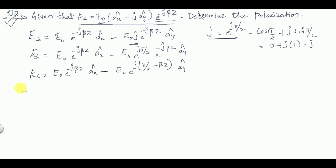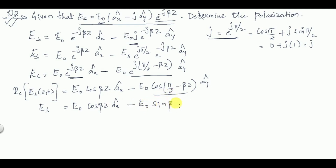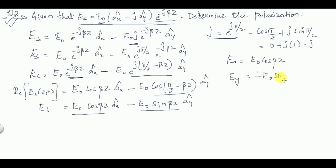For polarization we consider only the real part. The real part of E⃗_s is: E₀ · cos(βz) â_x minus E₀ · cos(π/2 − βz) â_y. Since cos(π/2 − θ) = sin(θ), this becomes E_x = E₀ cos(βz) and E_y = −E₀ sin(βz).